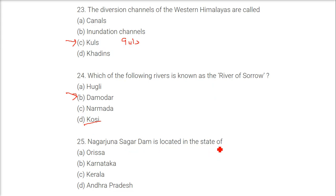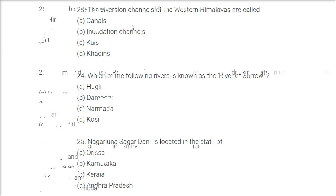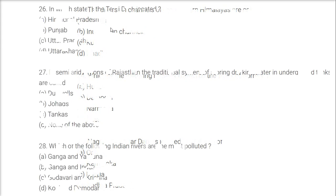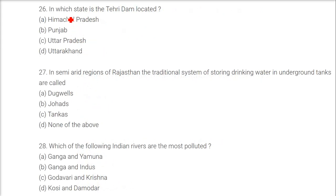Nagarjuna Sagar Dam is located in which state? The answer is Andhra Pradesh. In which state is the Tehri Dam located? It is in Uttarakhand.